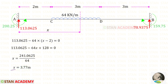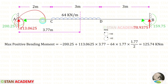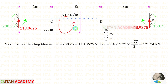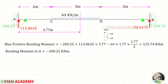Now let us find the maximum positive bending moment. MA acts anti-clockwise (negative), the reaction acts clockwise (positive) with distance 3.77, and the UDL acts anti-clockwise (negative) over distance (3.77 minus 2) = 1.77. The maximum positive bending moment is 125.74 kN·m.